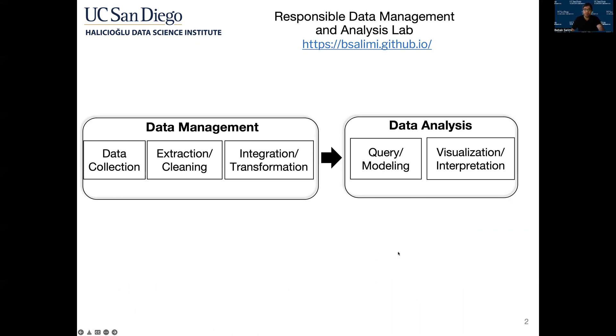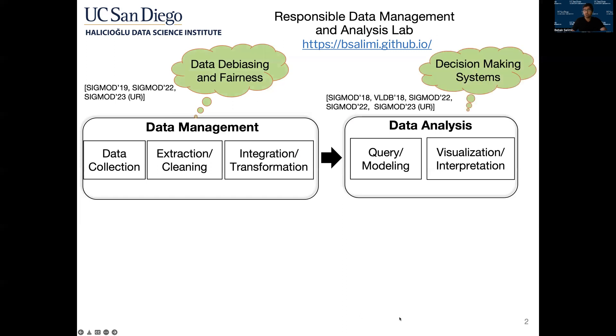In our group, we look into all stages in the data science pipeline to address issues related to responsible data science. There are lots of issues that can happen throughout the data science pipeline that could potentially lead to invalid, faulty, and discriminative decisions. In most cases, the issue is with the pre-existing bias in data. Our work in the context of data debiasing addresses these challenges by developing data cleaning methods to remove population-level data errors and data biases from data. Sometimes there's nothing wrong with data, but users simply ask questions that are not suitable for decision-making.